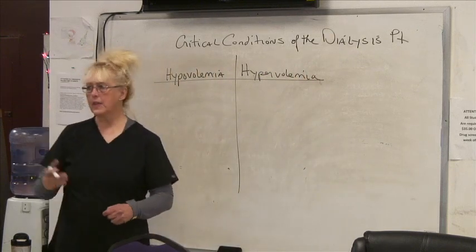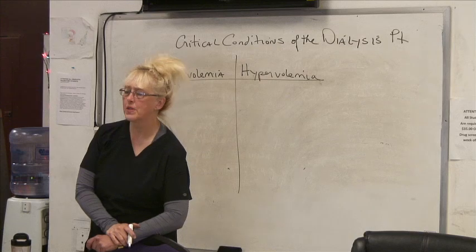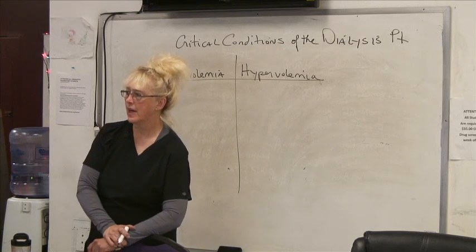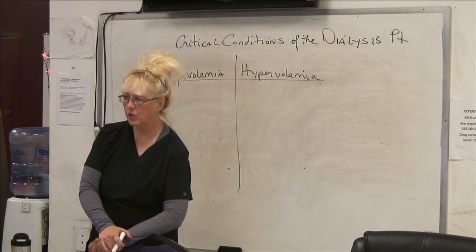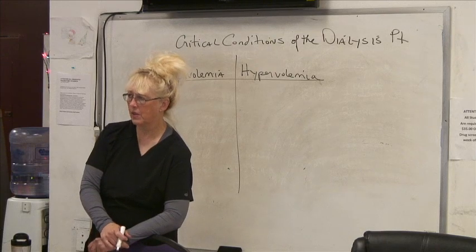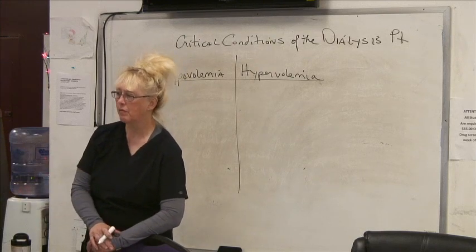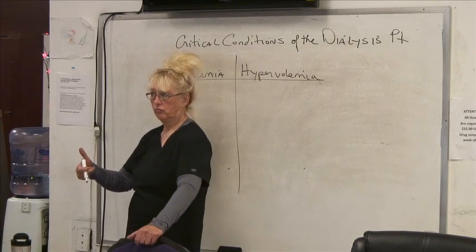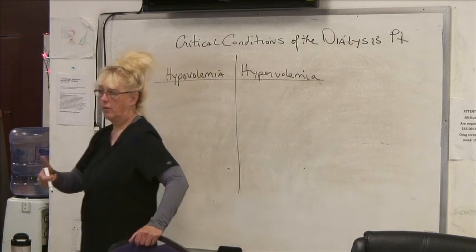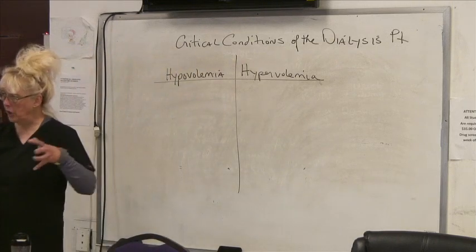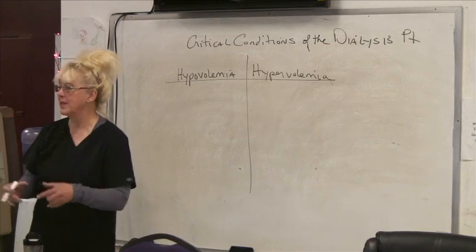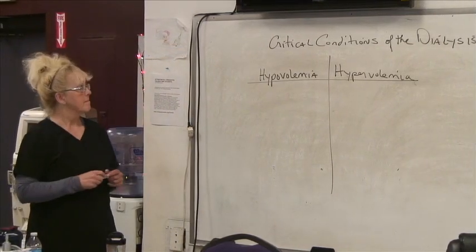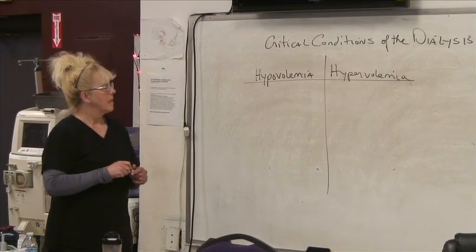Let's say you have a dialysis patient who comes in and you assess their vital signs. Normally, after 72 hours they haven't been able to release any of that fluid. What would you expect their blood pressure to be? High — because their fluid is not going anywhere. All that pressure is building up in their veins and arteries.